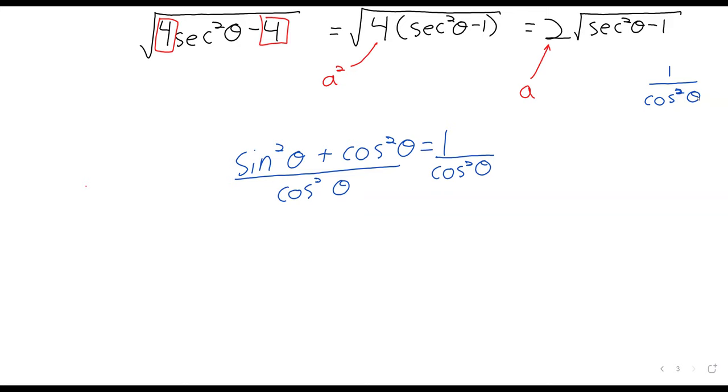The secant is one over the cosine. So the secant squared is one over the cosine squared. I'm borrowing trouble. This is going to work out fine. So I think, I hope. So the sine squared over the cosine squared, yes. It's the tangent squared plus one equals the secant squared.